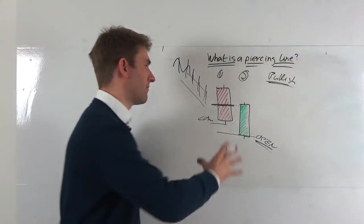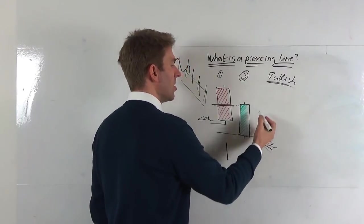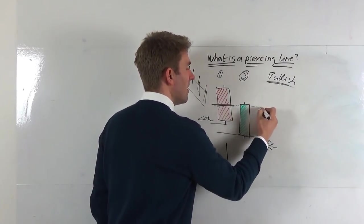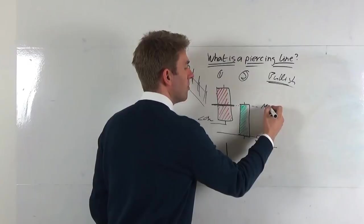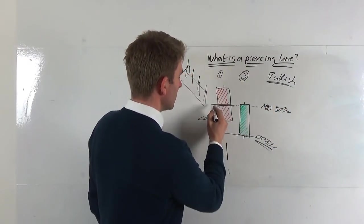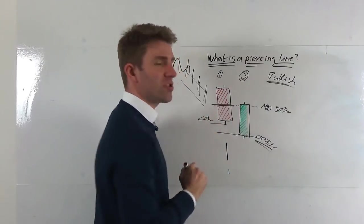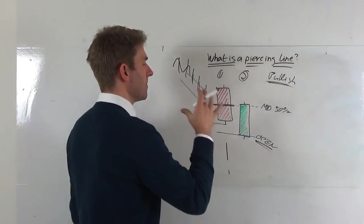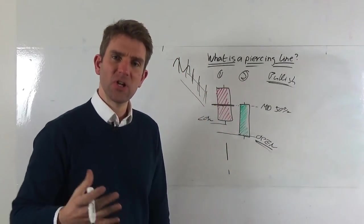And then what happens? We might get a little tiny move to the downside, but the important thing is for the day is that this thing pushes up and closes above the midpoint, 50% of the range of day one. So there's our midpoint there and we've closed just above it. That has given us a piercing line.